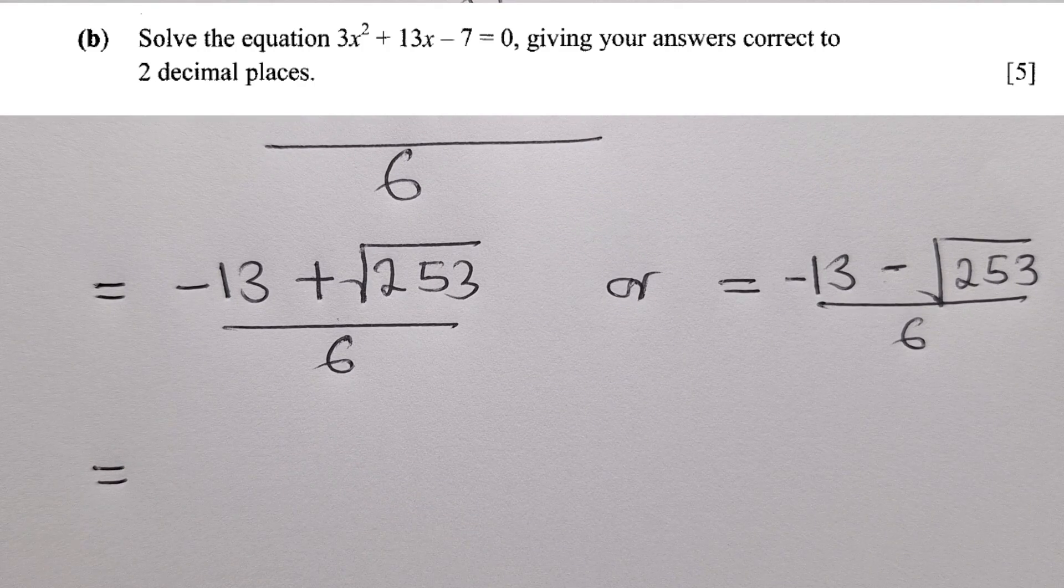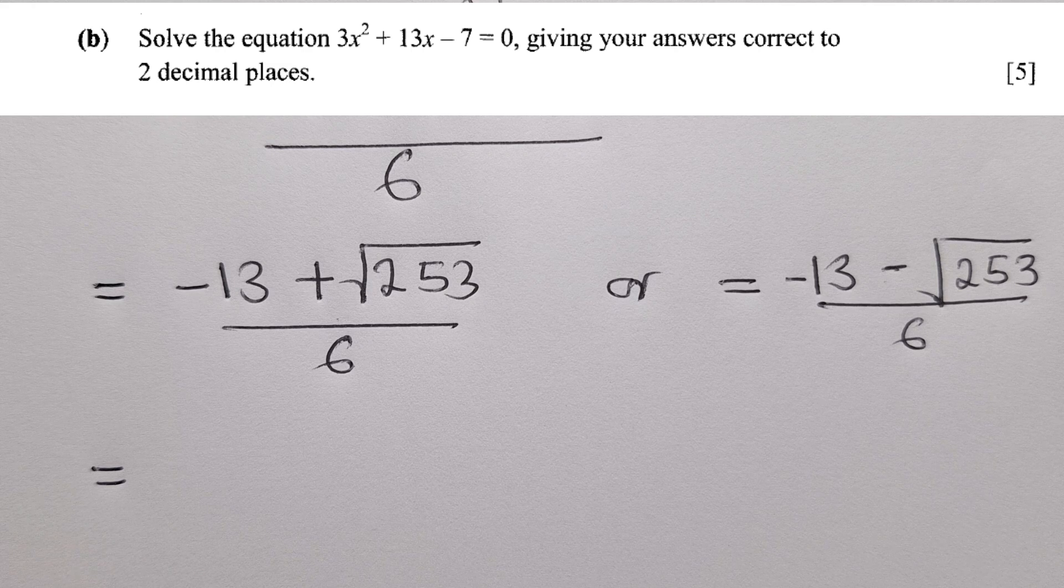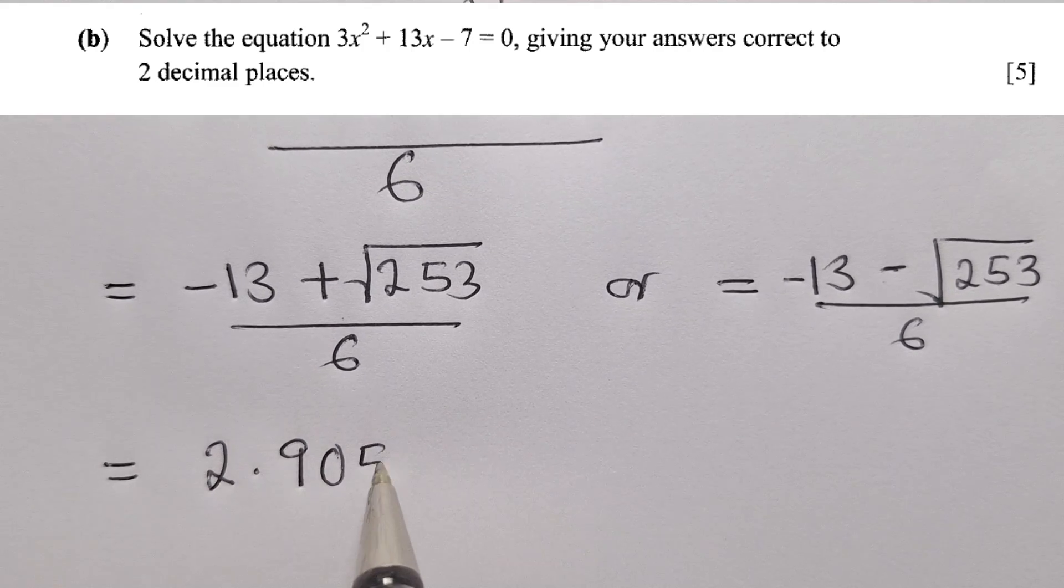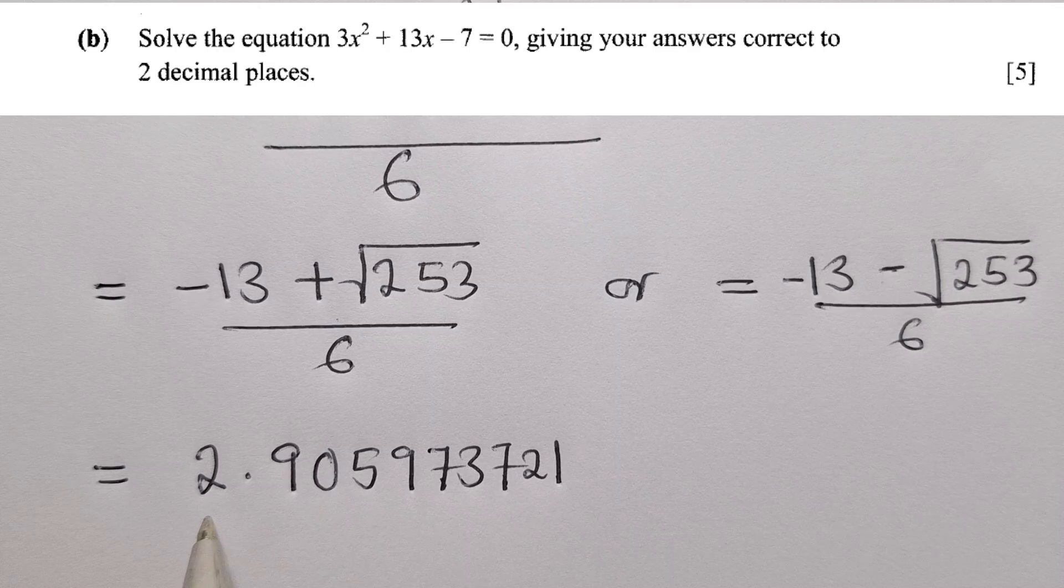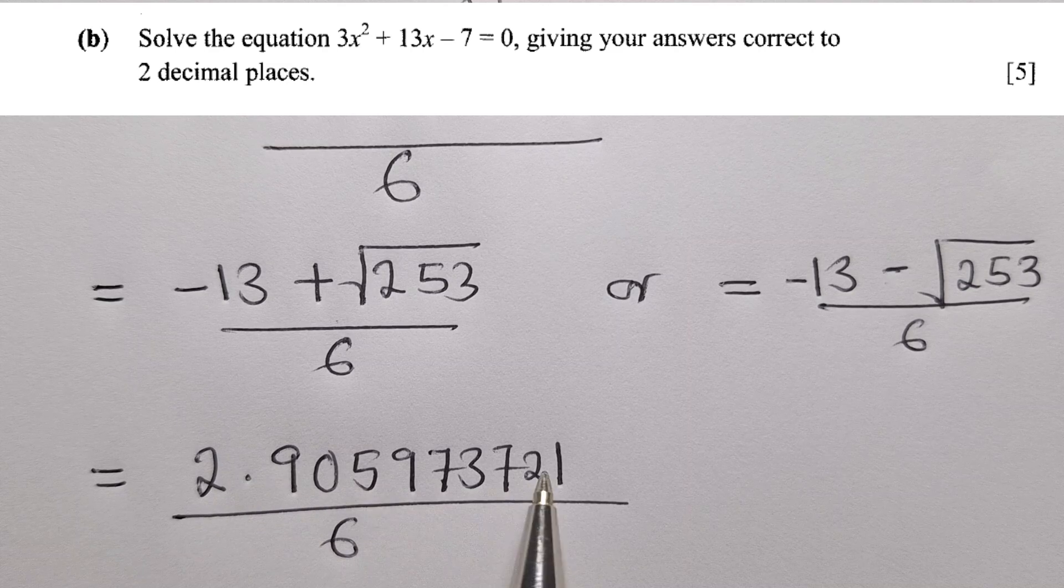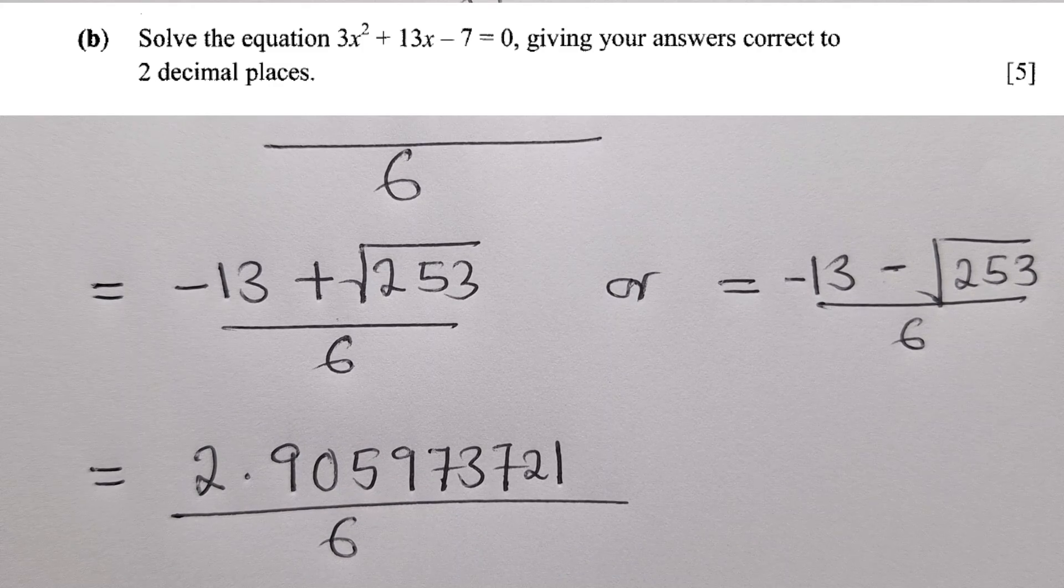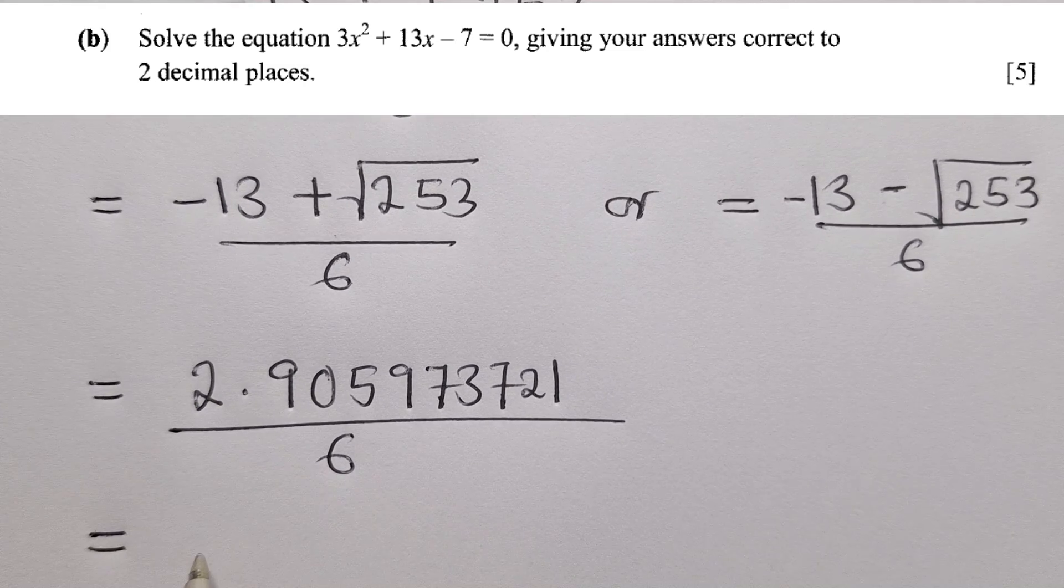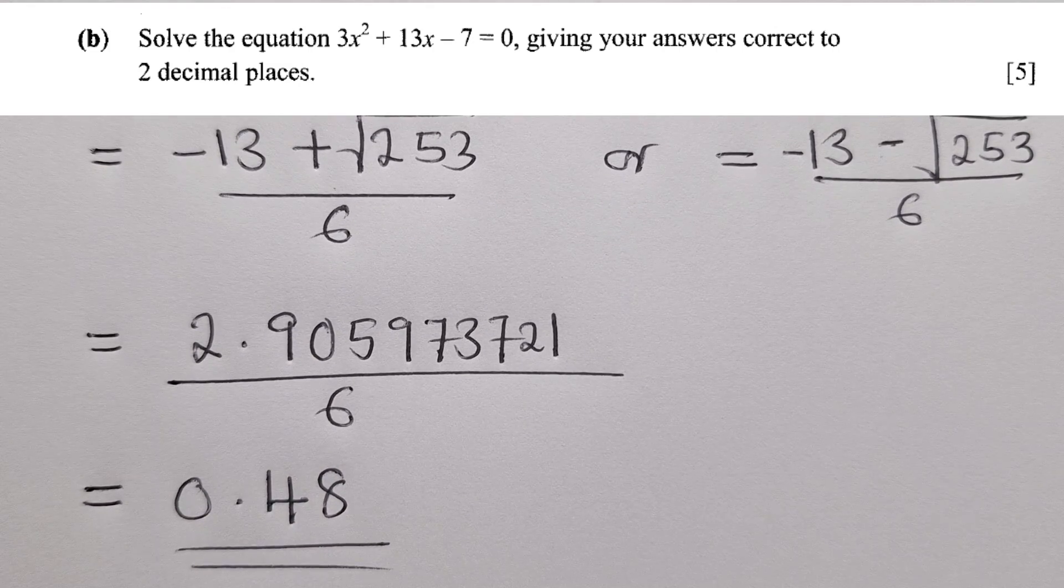So it would be equal to, when we say negative 13 plus square root of 253. Of course, it's giving us 2.905973721. And then you say over 6. So make sure you write, because here they'll mark. So make sure you write everything you copy. Don't feel lazy of copying. Just copy everything on your calculator. And then you come and say divide by 6. So when you divide by 6, your answer here, one of the solutions will be 0.48.